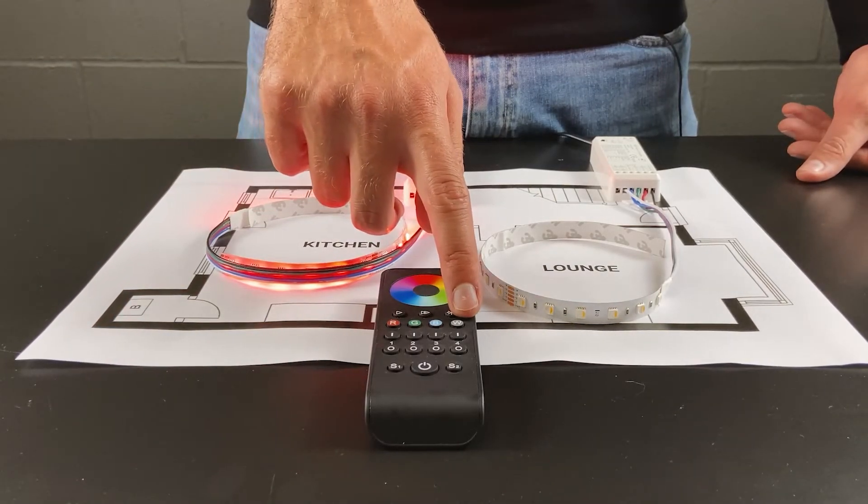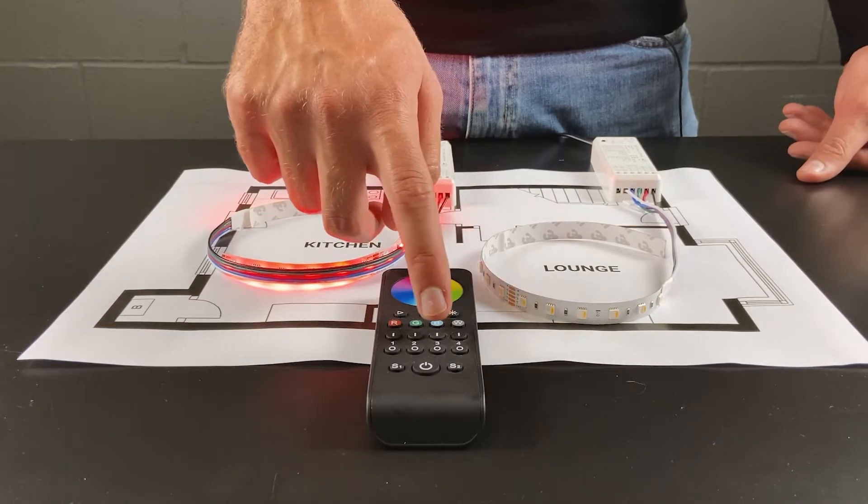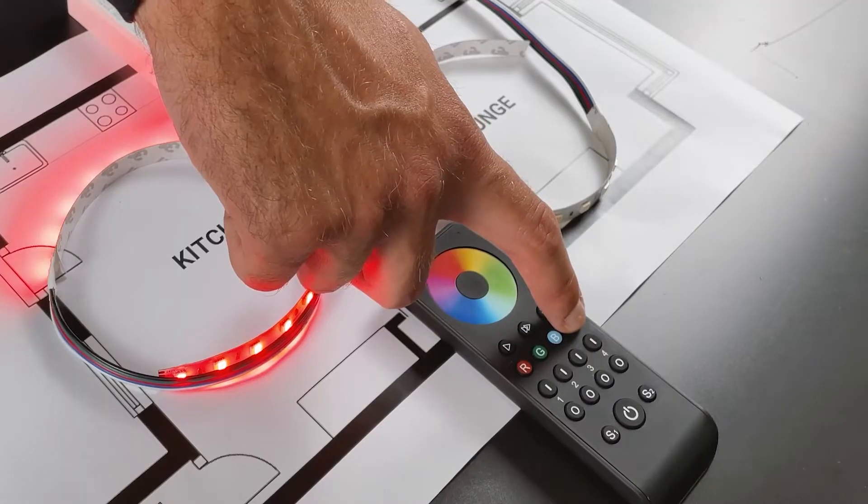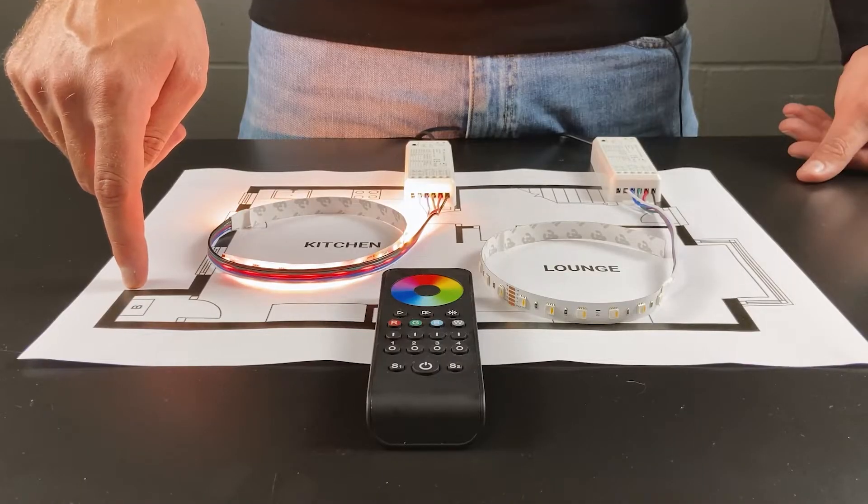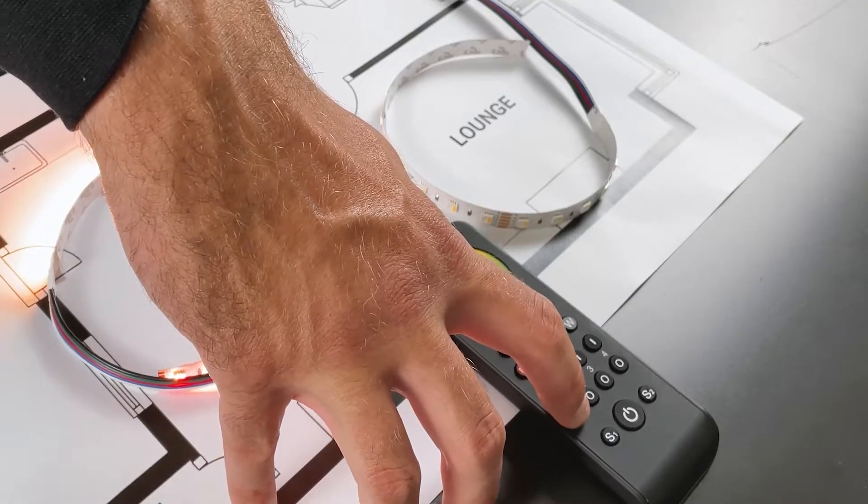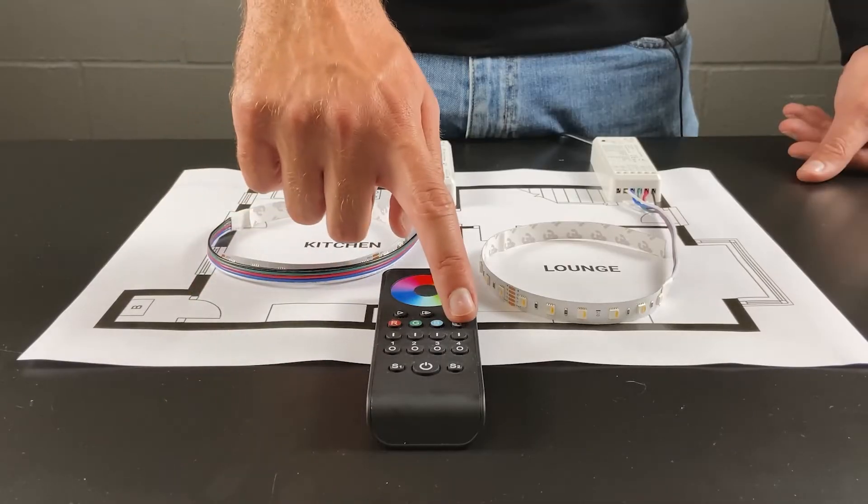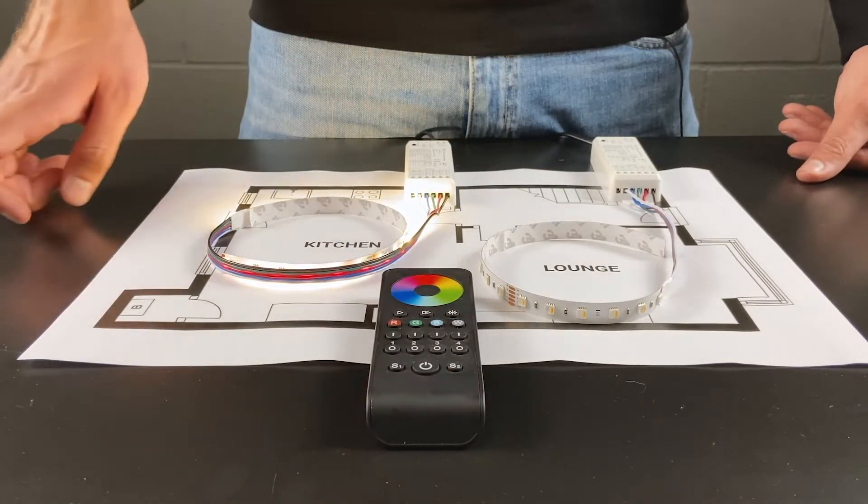The white on the WT5 handheld remote, if pressed, will bring in white as well as the other colour mix. To get white on its own, all we need to do is turn zone 1 off and then press the white button to bring in white on its own.